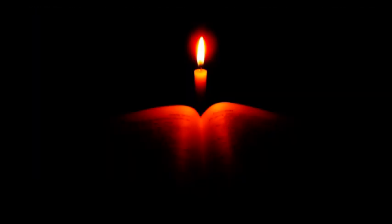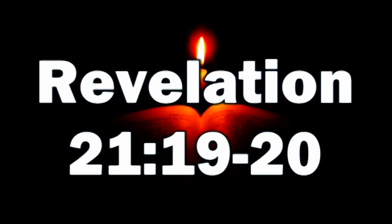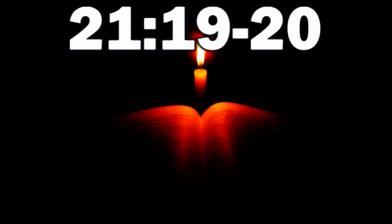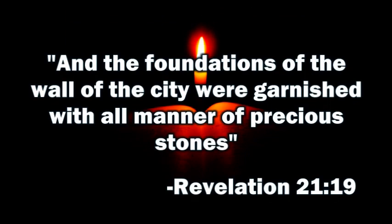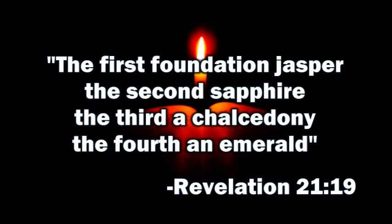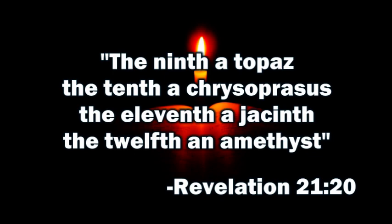We will read Revelation chapter 21, verses 19 and 20: 'And the foundations of the wall of the city were garnished with all manner of precious stones. The first foundation was jasper, the second sapphire, the third chalcedony, the fourth emerald, the fifth sardonyx, the sixth sardius, the seventh chrysolite, the eighth beryl, the ninth topaz, the tenth chrysoprase, the eleventh jacinth, the twelfth an amethyst.'